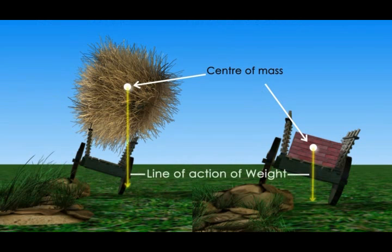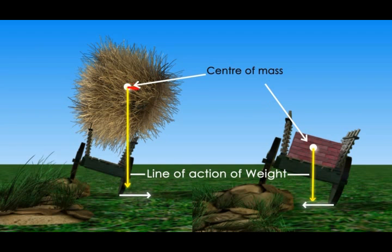We can draw a line showing the limit of its balance. It is called the line of action of weight. If the line of action of weight lies within the base area of the object, it stays balanced. But when the line of action of weight goes outside the base area of the object, it loses its balance and collapses.